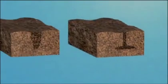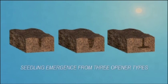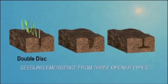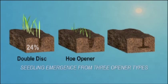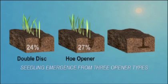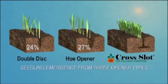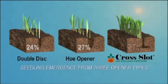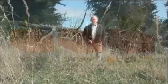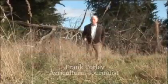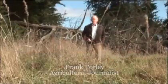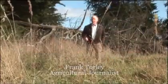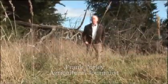The end result is the highest possible reliability of seedling emergence from dry soils, and horizontal slots are unique to cross-slot. Cross-slot openers put seeds where nature intended, under that residue.